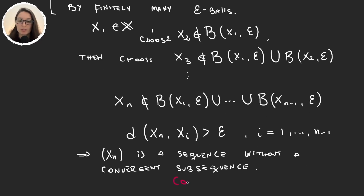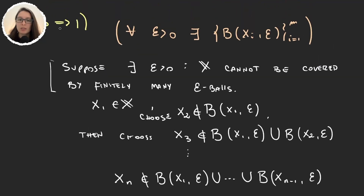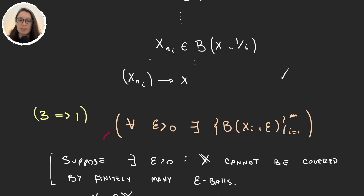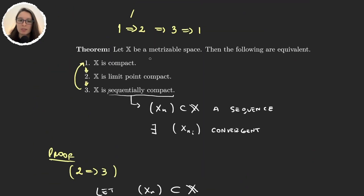We were able to construct a sequence with no convergent subsequence, which is a contradiction because our space was sequentially compact. Thus our space is compact, and that proves the theorem.